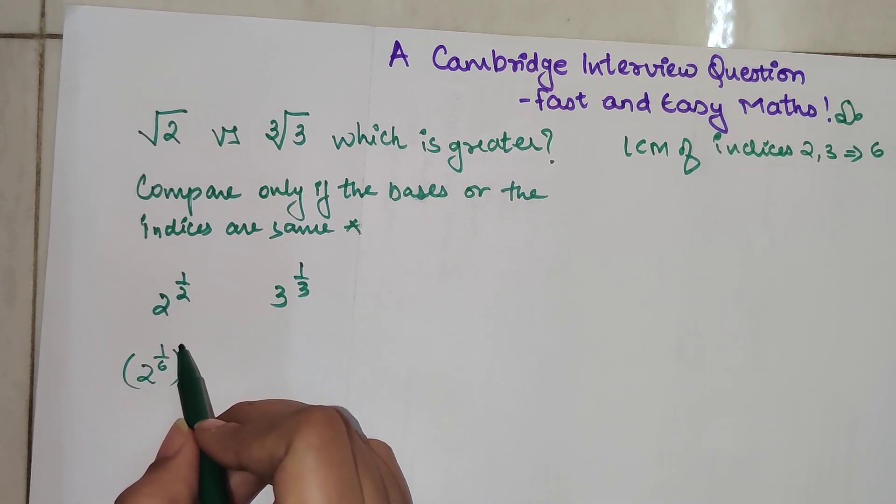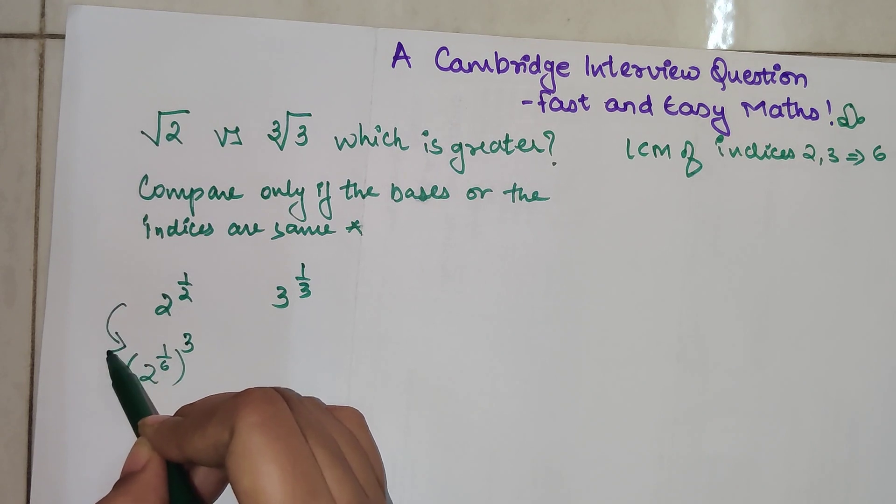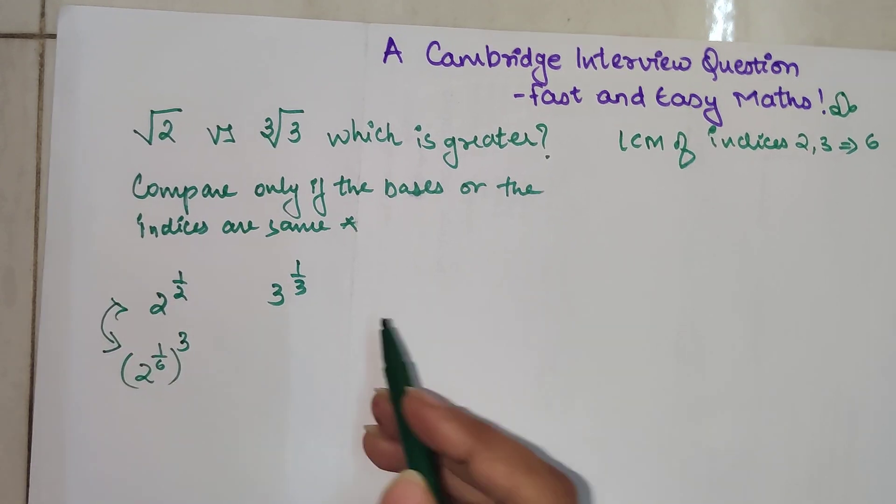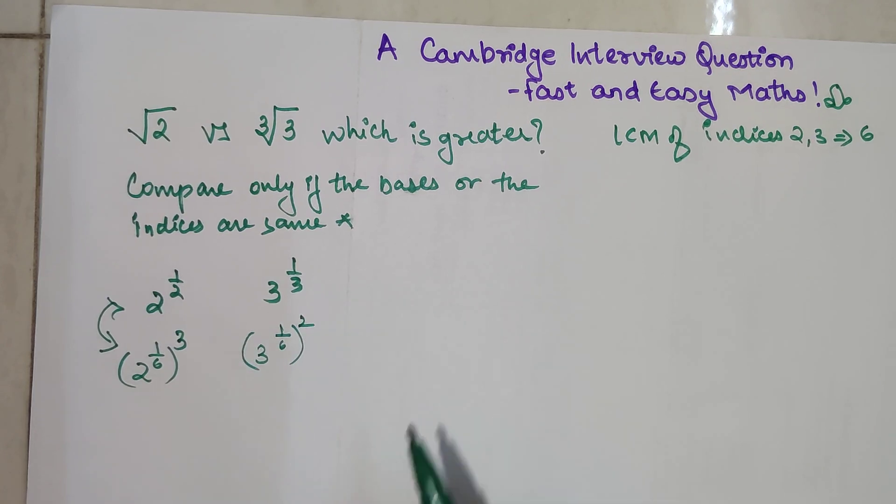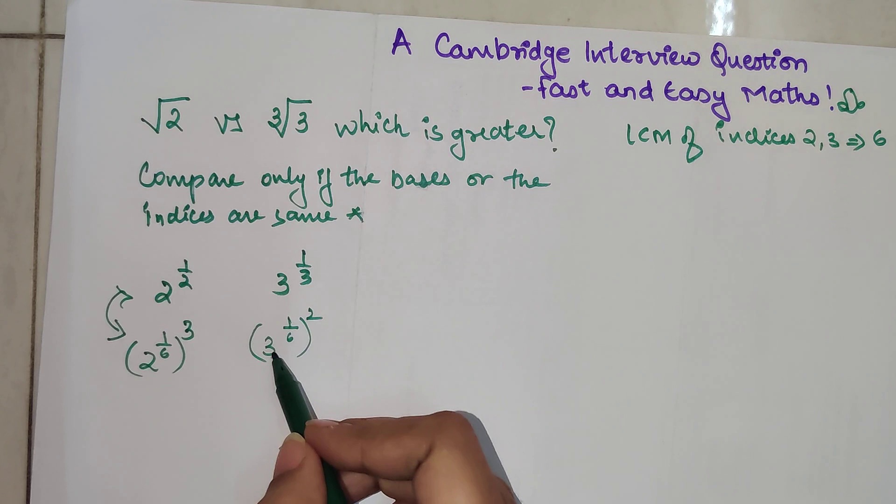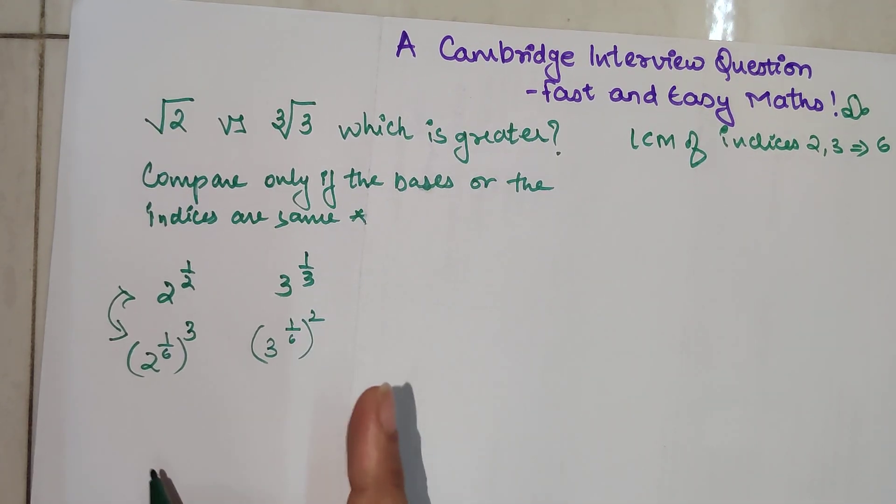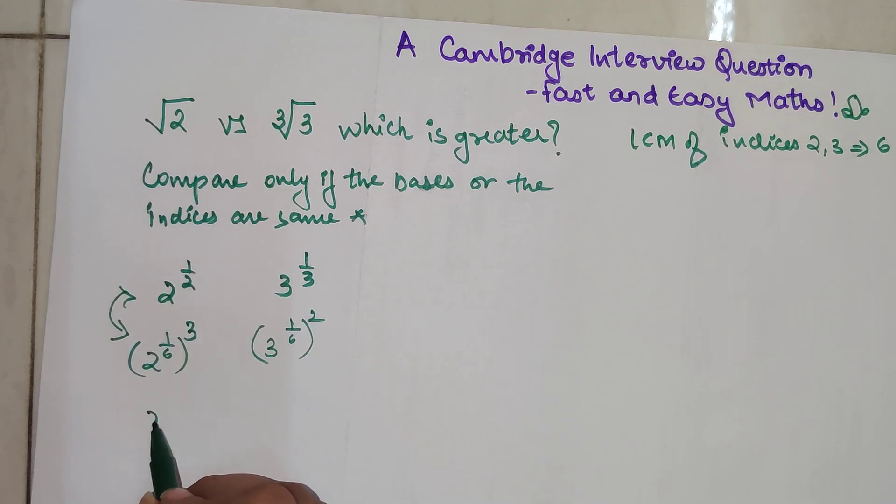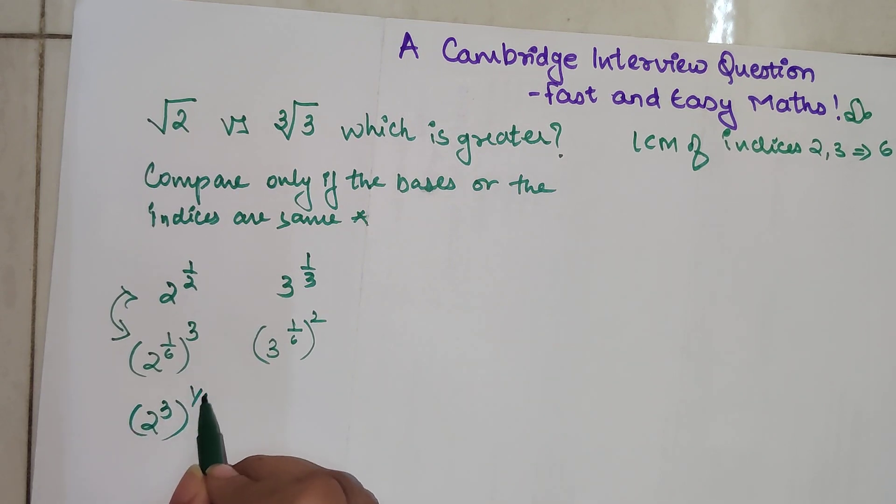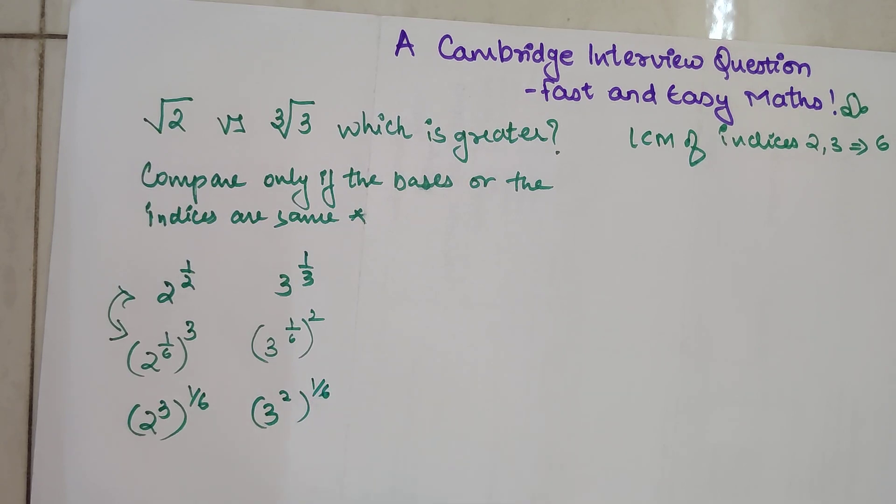1 upon 6 the whole raised to 3 will get you 1 upon 2 only. This is nothing but the same. Similarly, I can write this as 3 raised to 1 upon 6 the whole raised to 2. When I do that, this is nothing but 3 raised to 1 upon 3 only. So now let's switch the indices. We can write 2 raised to 3 the whole raised to 1 upon 6, and similarly 3 raised to 2 the whole raised to 1 upon 6.